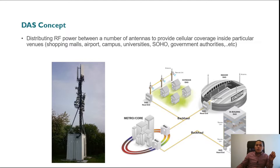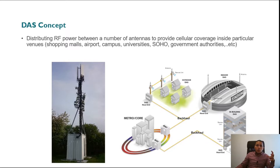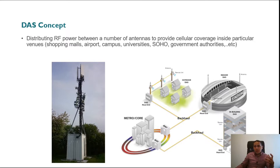You also need adequate data rates for internet browsing, online gaming, and live streaming on YouTube — which requires very high data rates inside the building. In order to support such services, mobile operators have to deploy a dedicated system inside the building, called a distributed antenna system, which provides cellular coverage inside the building.